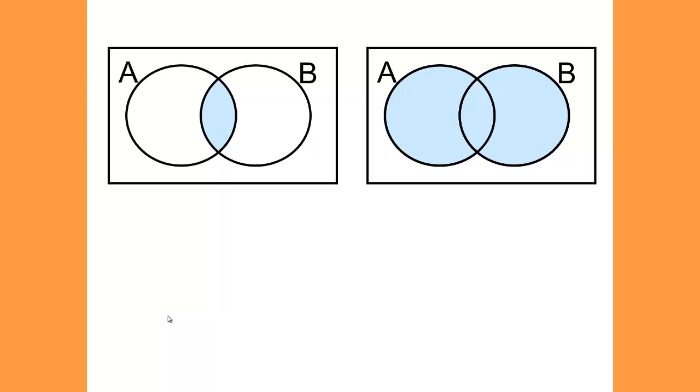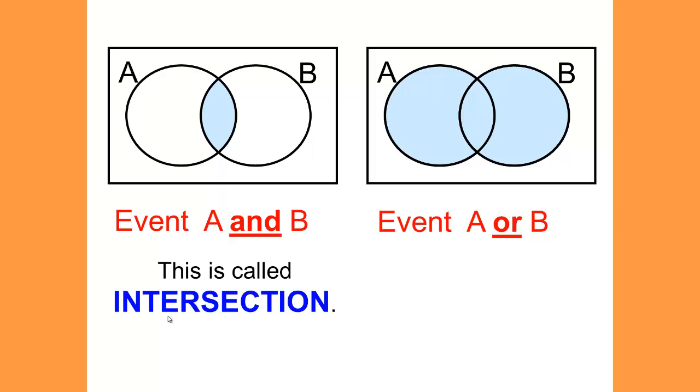Which is A and B? Which is A or B? Event A and B is called the intersection. Event A or B is called the union. The intersection where they overlap. The union where we shade the entire circles for both.